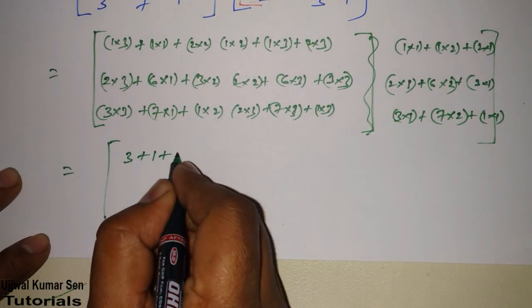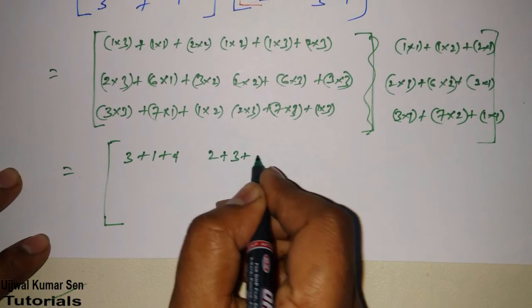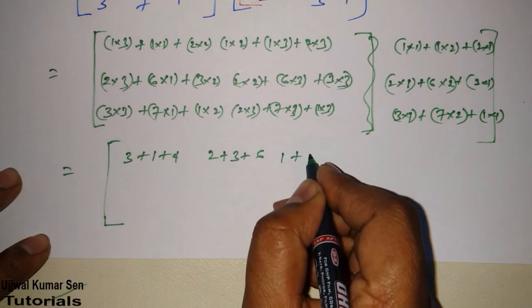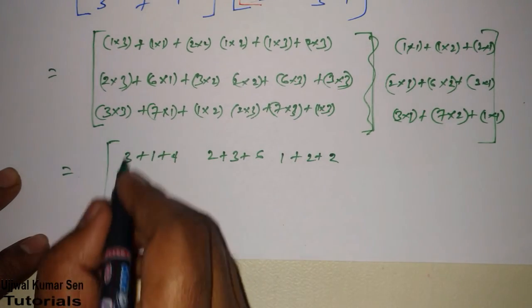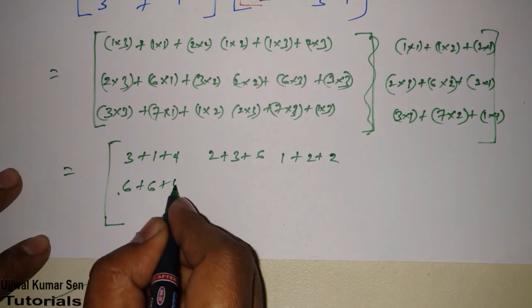So, 3 plus 1 plus 4, 2 plus 3 plus 6, 1 plus 2 plus 2, 6 plus 6 plus 6,